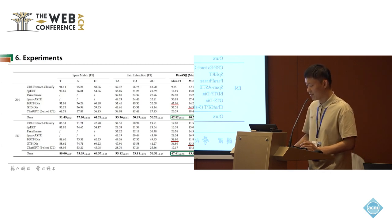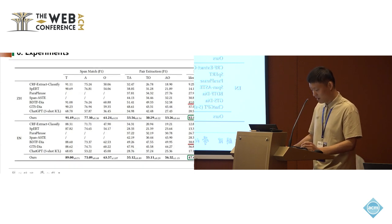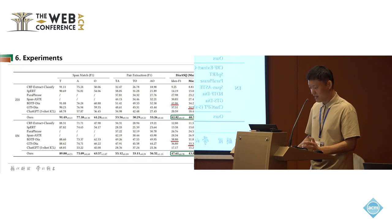We verify our method in the DIA-ASQ benchmark, which includes Chinese dataset and English dataset. Following previous work, we take identification F1 and micro F1 as measurements for evaluating the DIA-ASQ task. The micro F1 measures the whole quadruple, while identification F1 does not distinguish the sentiment polarity. We also test the span match and pair extraction subtasks using exact F1, where a prediction is only correct if the extracted span or pair matches the ground truth exactly.